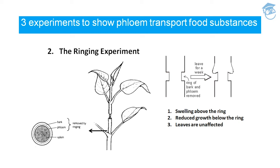Transport takes place in one direction — towards the root. Reduced growth is seen below the ring, and leaves are affected. This is the ringing experiment performed to show that phloem transports food substances.